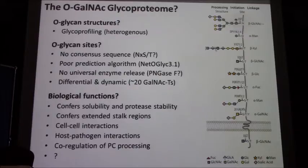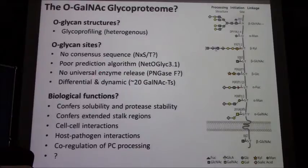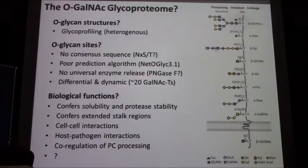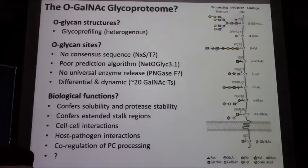The complexity here includes: no consensus motif, poor prediction algorithms, no universal enzyme to release O-glycans like PNGase F does for N-glycans, and highly differential and dynamic activity among those 20 GalNAc-T enzymes.